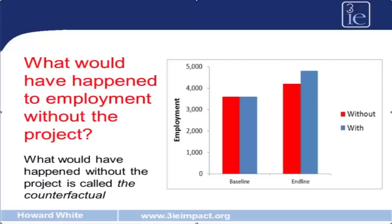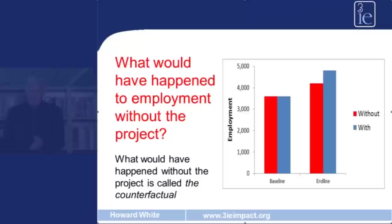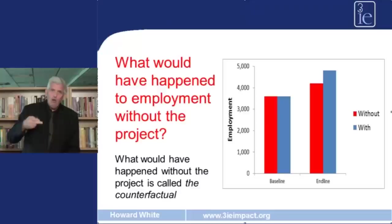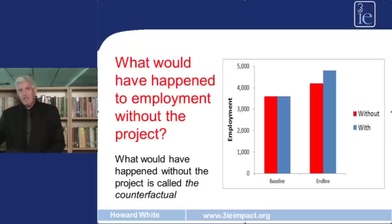Under the counterfactual of no project, employment prior to the project was 3,200 — the same as in project areas, since the project had not yet taken place. But at end line, employment in SMEs would have risen to 4,200 people even in the absence of the project. Because employment rises even without the project, we cannot attribute the whole change in outcomes to the project. To figure out how much of the increase can be attributed to the project, we need to establish a counterfactual — and this is the challenge that impact evaluation seeks to tackle.